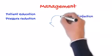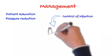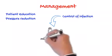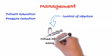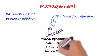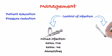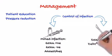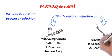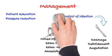The third step is control of infection by giving intravenous antibiotics covering gram-positive, gram-negative, and anaerobes, along with surgical drainage, debridement, and amputation if needed.